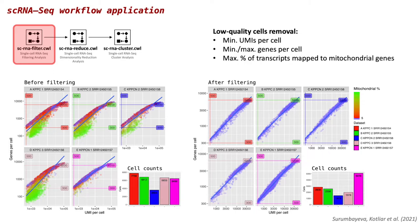Here we see some of the figures produced by the first step of the data analysis workflow. The aim of that step was to remove low-quality cells based on the calculated QC metrics. These plots show genes versus transcripts per cell correlation, as well as the total number of cells per dataset before and after filtering.